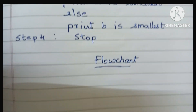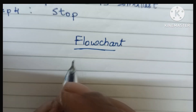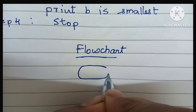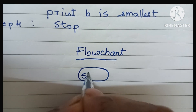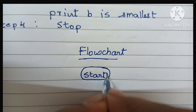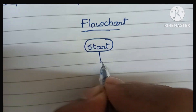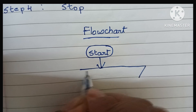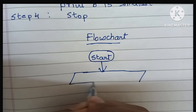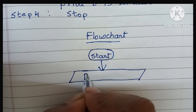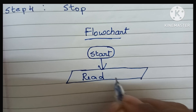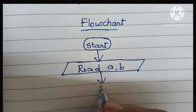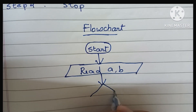A flowchart is a graphical representation of a solved problem. The flowchart starts with the start statement written within an oval shape. Next, we have to read input values — input values are always written within a parallelogram shape, so we draw a parallelogram and within that read two variables a and b.